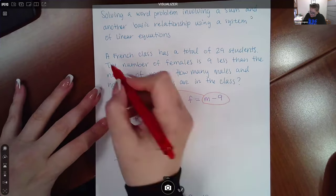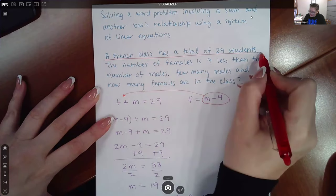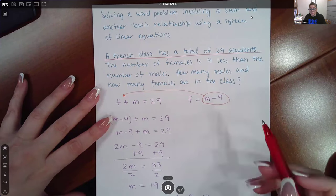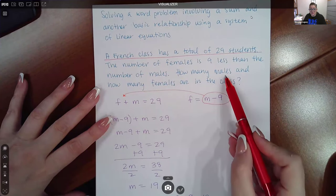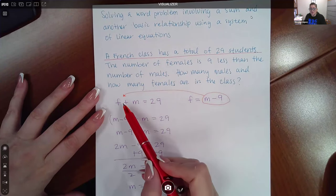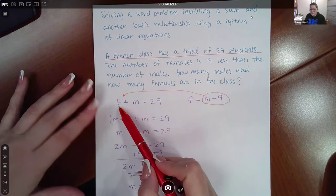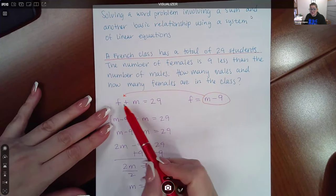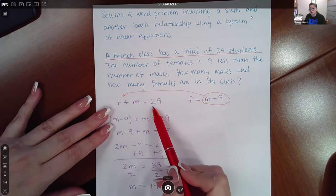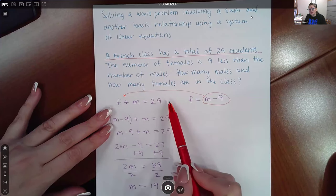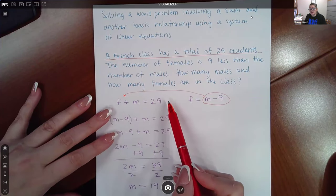This first sentence says a French class has a total of 29 students. They ask how many males and how many females there are. So we can come up with an equation where F is the number of females in the class, M is the number of males in the class, and together that should make the total 29 students. So F plus M would equal 29. That's our first equation.